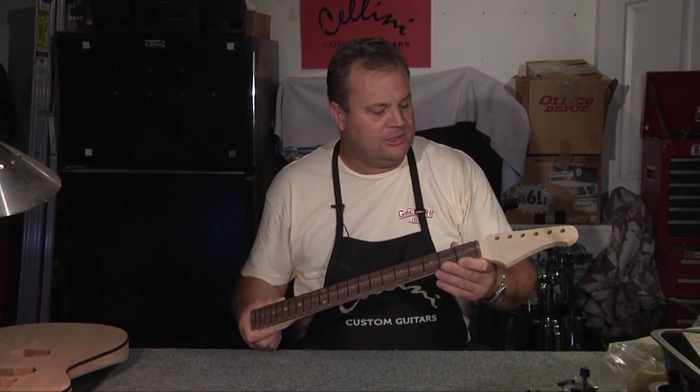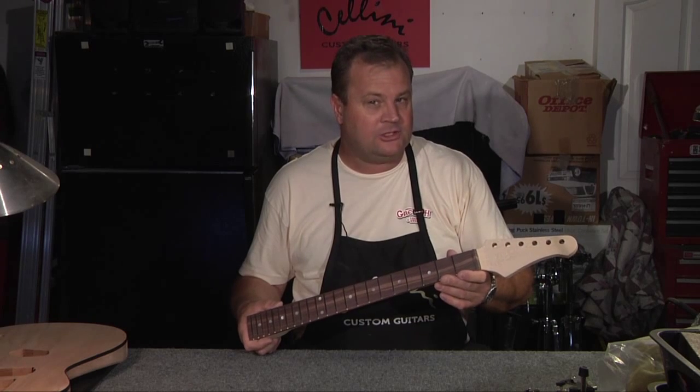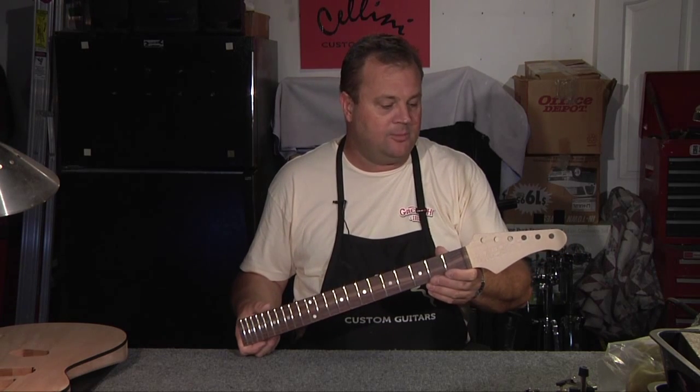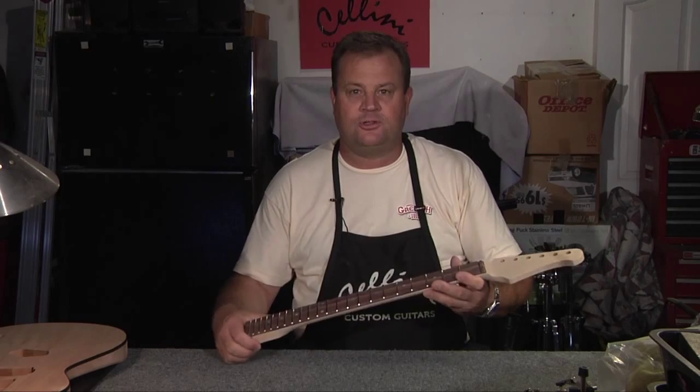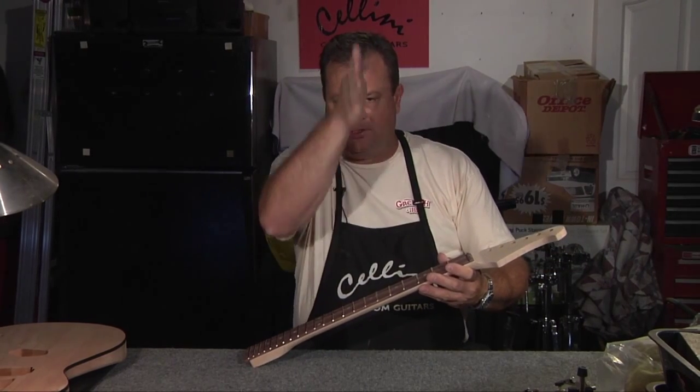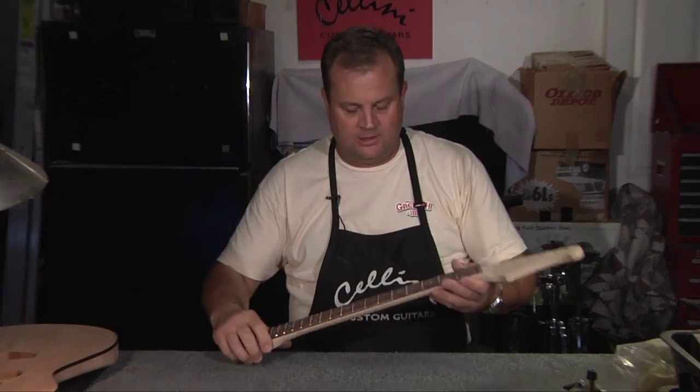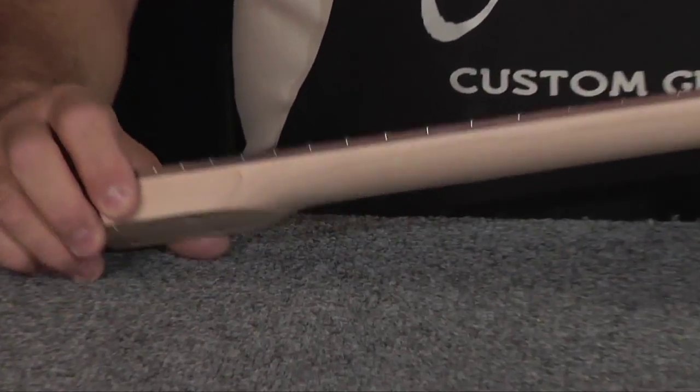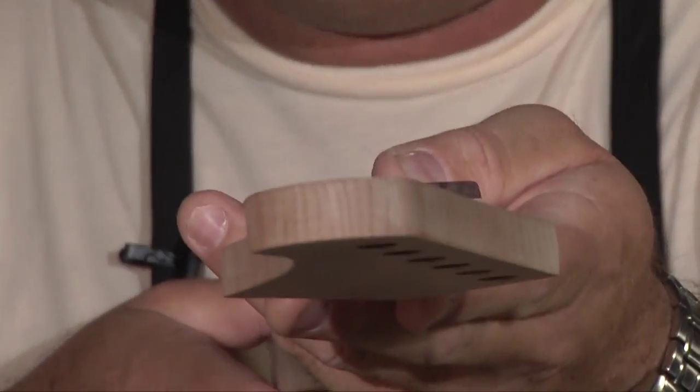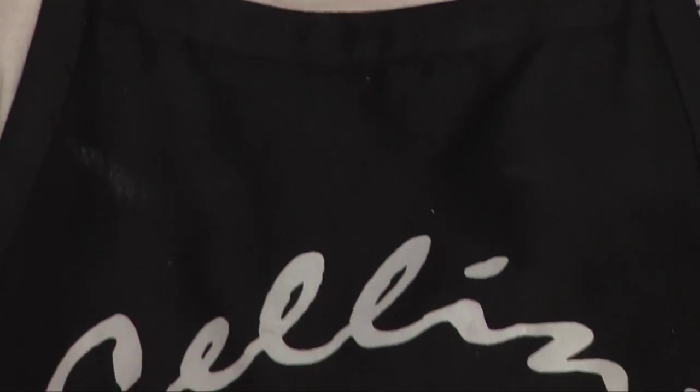The maple that I'm using in this is quarter sawn rather than flat sawn. The quarter sawn maple is a lot stronger just the way it's cut. The grain is vertical, flat sawn is horizontal. So the vertical type cut in the grain, I don't know if you can see that at the tip of the headstock, how the grain goes up and down. But it makes for a strong neck, it's very durable.